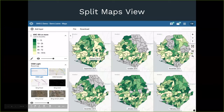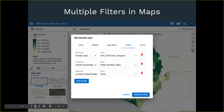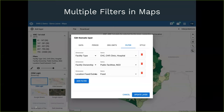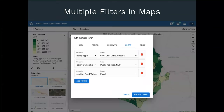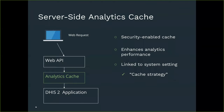That concludes the frontend analytics section — a lot of exciting updates. You can ask questions in Slack, Zoom, or the community of practice and we'll try to answer some now. On the backend and admin side, we did something very important in 2.34 — we introduced the server-side analytics cache. We've seen that a lot of implementations are getting a lot of data, the data volume is growing, and more requests are pounding the analytics API with a need for faster responses.